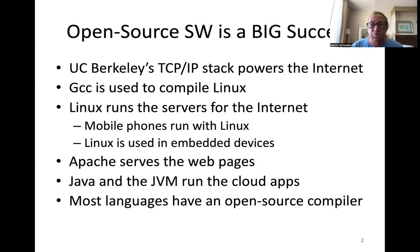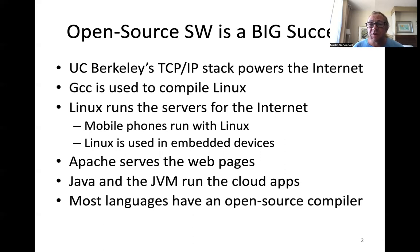We take open source software kind of for granted. We are used to GCC that can compile Linux, Perl, TCP/IP stack, probably most of our devices. This is open source, one of the first open source projects. Linux is used to run servers, many of them on the internet. It runs on half of the mobile phones and in embedded devices. Apache web server is open source. We can run Java to build cloud apps, and most languages we use today have an open source compiler which is free to use. It was a big difference to the 80s and 90s.